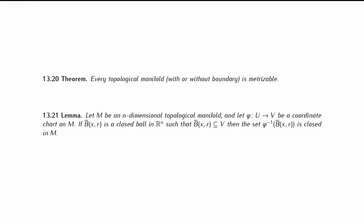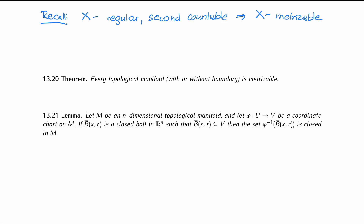Topological manifolds, which are our main object of interest at the moment, give us an opportunity to use the Urysohn metrization theorem which we proved in the last chapter. Recall that this theorem says that if we have a space X which is regular and second countable, then such a space is metrizable — meaning we can equip it with a metric compatible with its topology. My goal in this video is to use this result to prove that every topological manifold is a metrizable space.